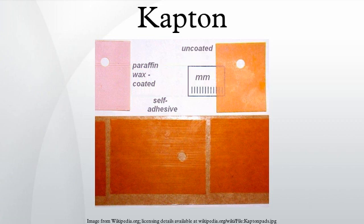Kapton-insulated electrical wiring has been widely used in civil and military aircraft because it is lighter than other insulators and has good insulating and temperature characteristics. For these reasons, the sunshield of the James Webb Space Telescope will also be made of it.